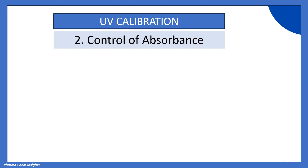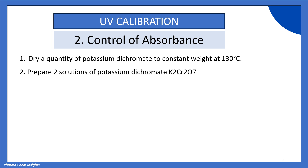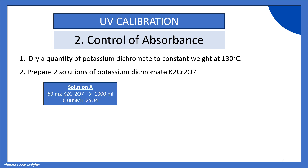Let's move on to the next parameter: control of absorbance. In this, we first dry a quantity of potassium dichromate to constant weight at 130 degrees Celsius. Then we prepare two solutions of potassium dichromate. For Solution A, we weigh 60 mg of potassium dichromate and transfer to a 1000 ml volumetric flask. We dissolve the 60 mg of potassium dichromate in 0.005 molar H₂SO₄ solution and make up to volume with the same 0.005 molar H₂SO₄ solution.